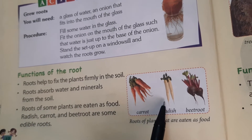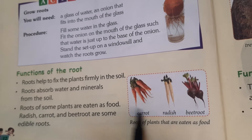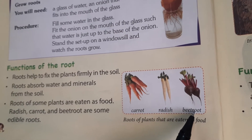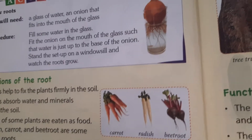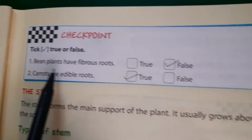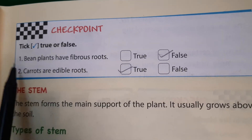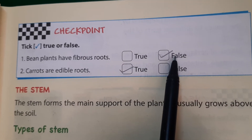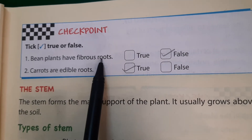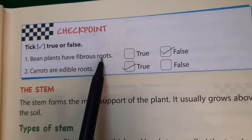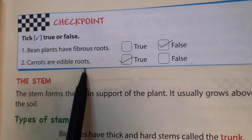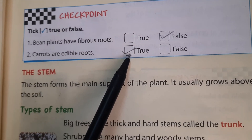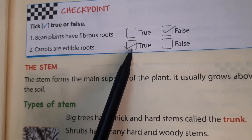Radish means mooli. We have carrot — you eat carrots. And beetroot as well. These are some roots that we can eat as food. Now let's check what we have learned. First: bean plants have fibrous roots — true or false? False, because beans have tap roots, which grow from a single main stem. Second: carrots are edible roots — yes, carrot is a part of the plant that is edible, which means we can eat it.